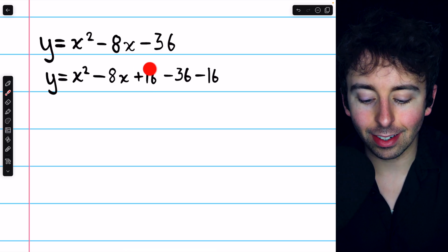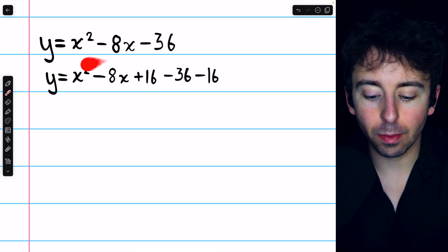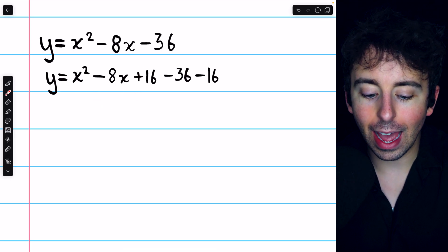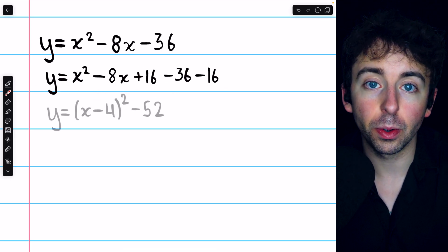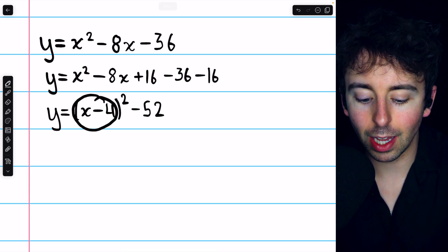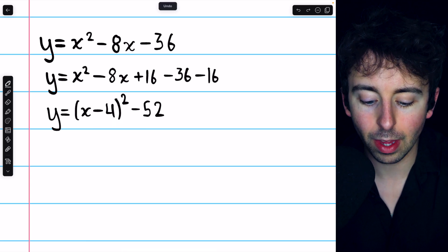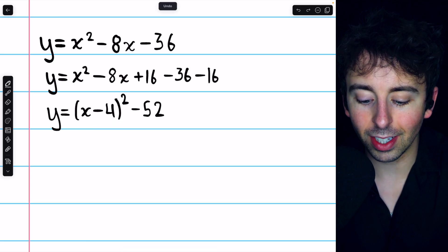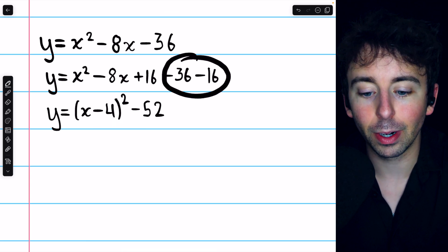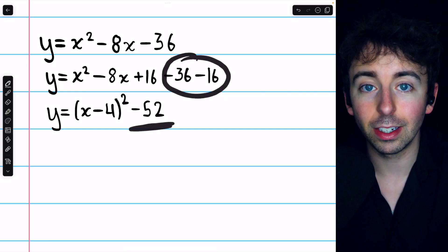Hence, we add 16 and subtract 16. This allows us to complete the square without having actually changed the value. Then to write this as a square, we just write it as x plus b over 2, and b over 2 in this case is negative 4, squared. And then we still have this outside of the parentheses,